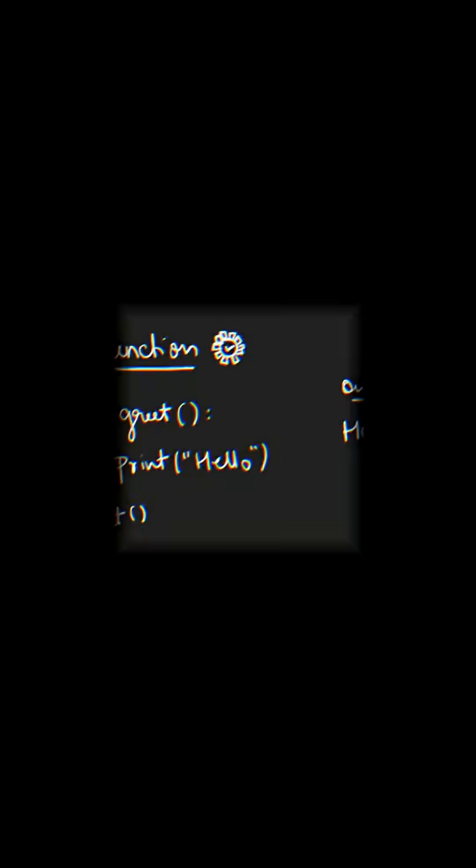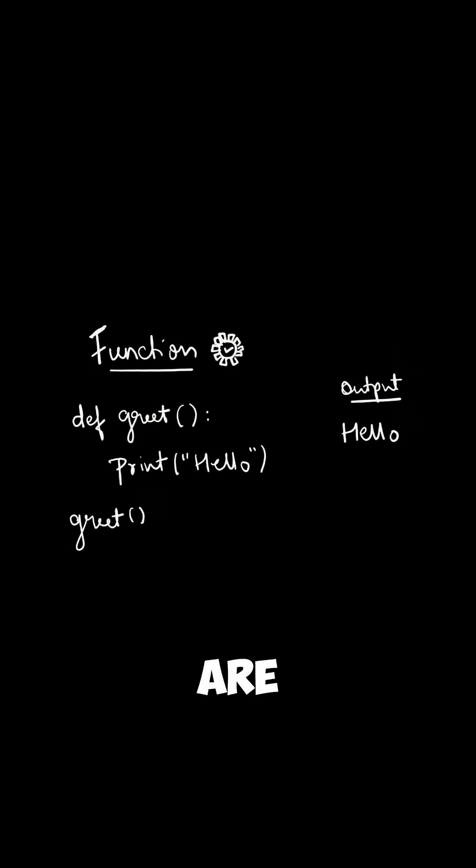Next we have functions. Functions are snippets of code that we can write to do a specific task. For example, function greet is printing hello, so whenever function greet is called, the output will be hello.